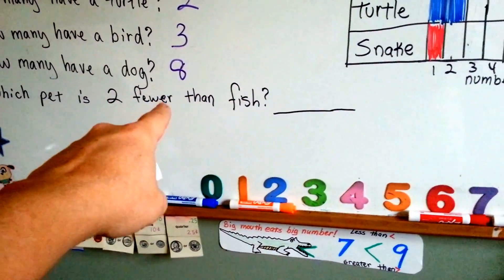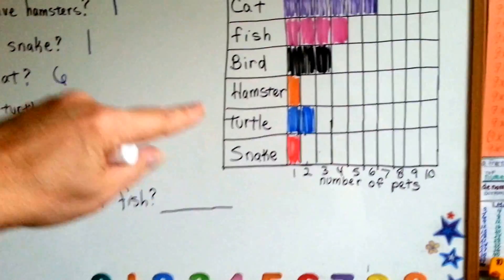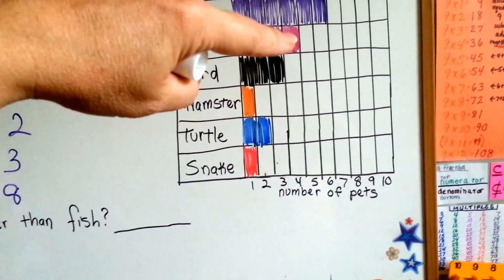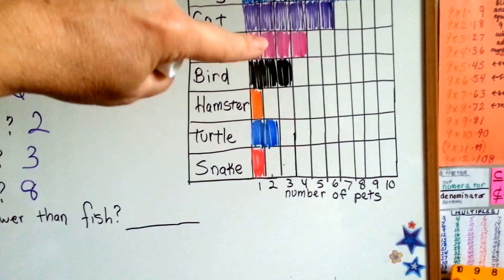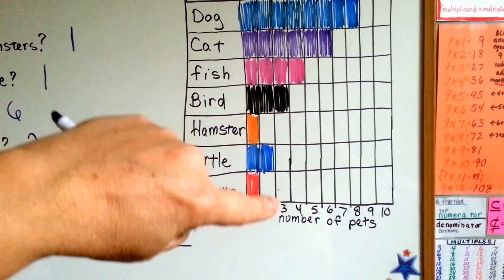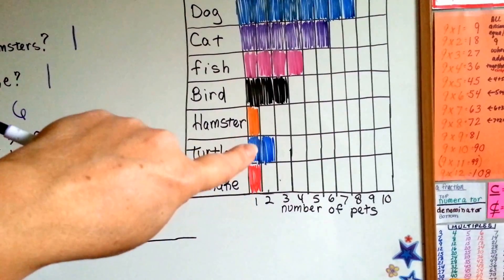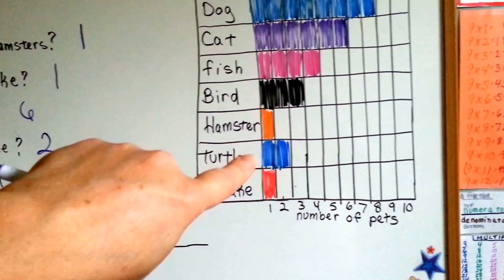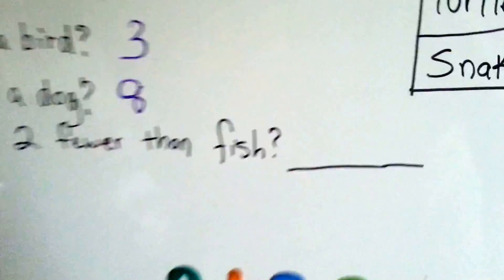Which pet is two fewer than fish? Two fewer than fish. Well here's fish. Which one has two fewer? One, two. So which one comes to this line here? Turtle. Turtle only has two and fish has four. So turtle is the one that is two fewer than fish.